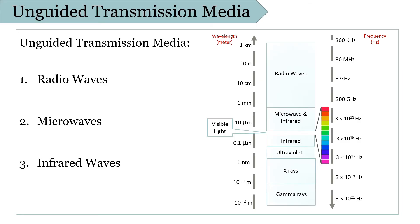Microwaves are transmitted in a straight line and hence require line-of-sight transmission. The distance covered by microwaves depends on the height of the sender and receiver's antenna — the taller the antenna, the longer the distance covered. As they are high frequency waves, they are usually used by mobile phones, televisions, etc.